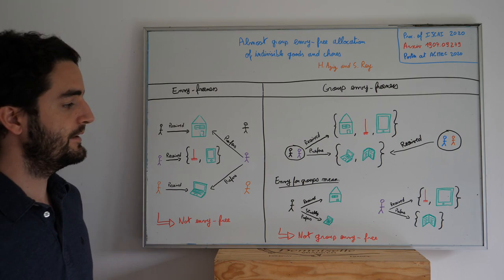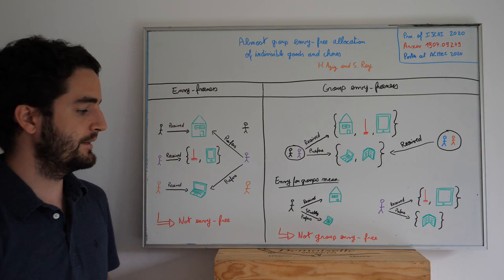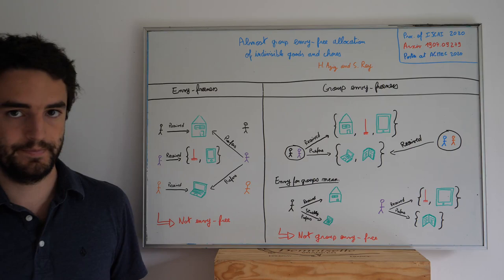The question is, how can we generalize this to groups of agents? We will do so by saying that one group of agents envies the other if there exists a reallocation of the items that the second group received that will define a Pareto improvement for the first group, meaning that one agent strictly prefers what they would get, and the others only weakly prefer it.